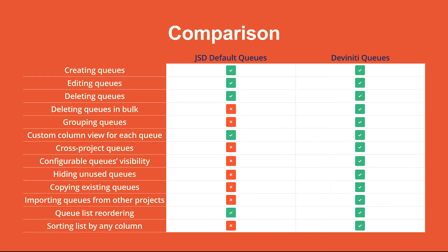As I already mentioned, only Service Desk agents and Jira administrators can see the queues by default. We made them visible to all user groups, and also added a configuration possibility. This means that every part of the team sees only what's relevant to them. You can restrict the developers to the development issues, let your system administrators handle hardware and software requests, or remind the HR department of their specific tasks.